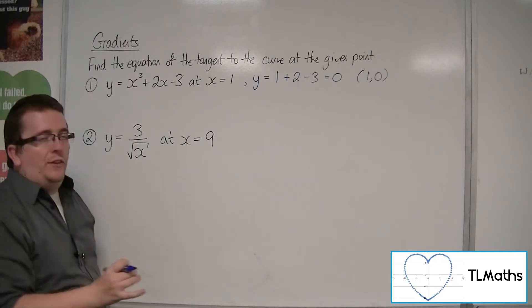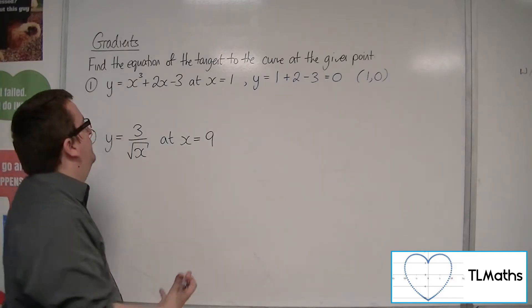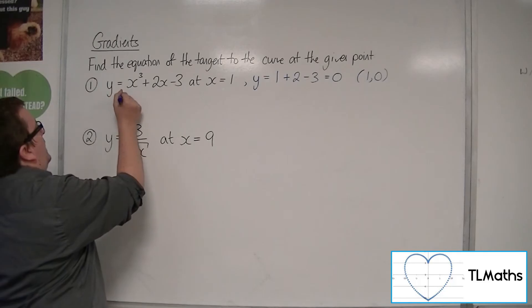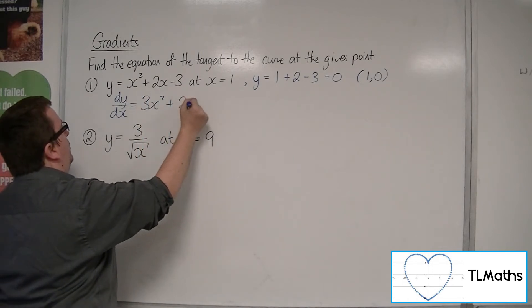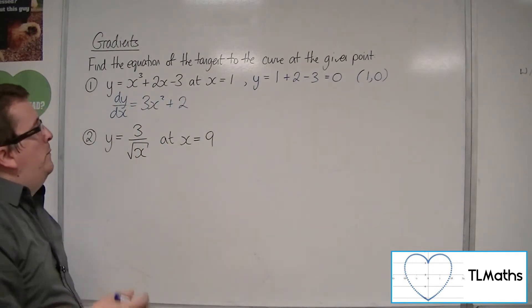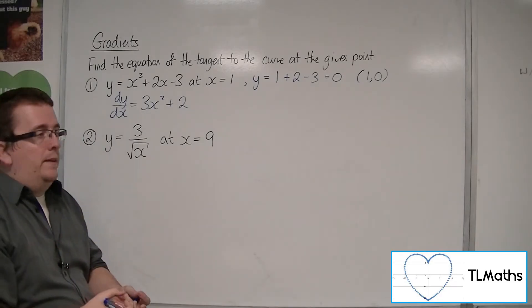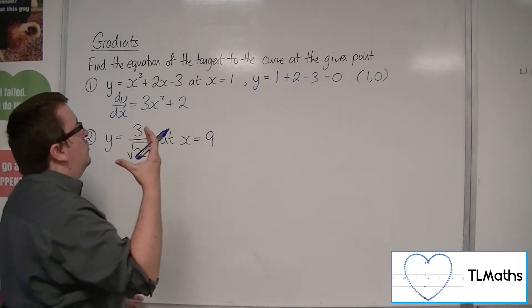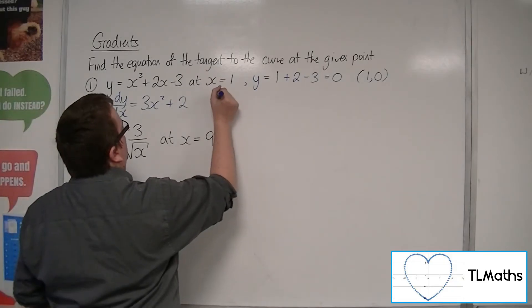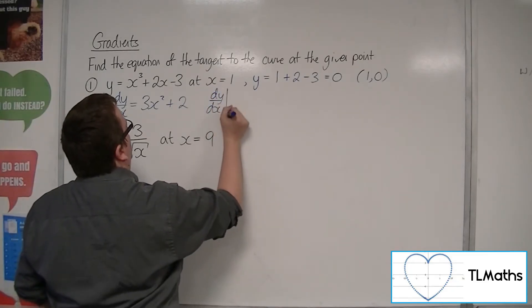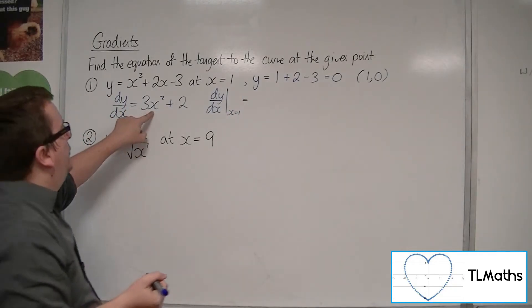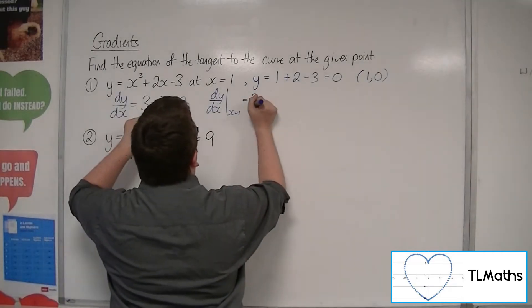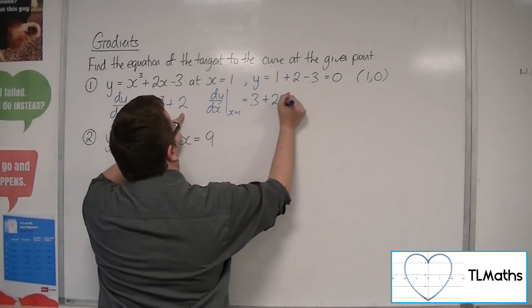Now the next thing to do is to find the gradient function. So find dy by dx. So differentiating this we get 3x squared plus 2. And then we want to substitute in x equals 1 into that to find the gradient of the tangent. So we want to evaluate dy by dx when x equals 1. So we get 3 lots of 1 squared, so 3, plus 2, and so we get 5.